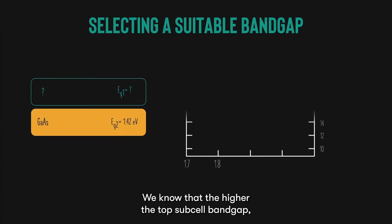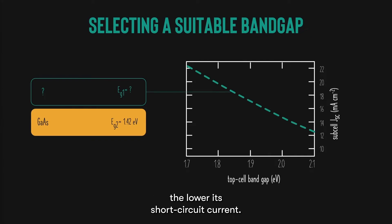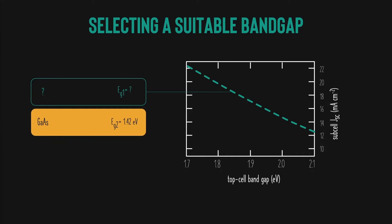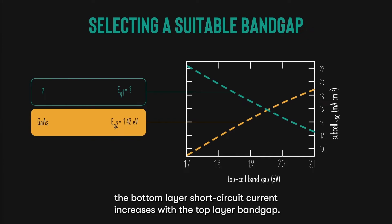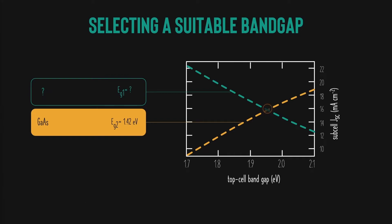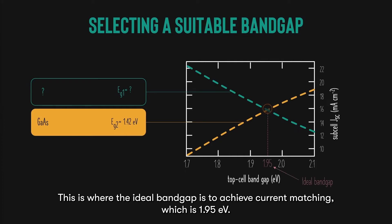We know that the higher the top sub-cell bandgap, the lower its short circuit current. But because the higher top sub-cell bandgap allows a greater range of light to pass through to the bottom layer, the bottom layer short circuit current increases with top layer bandgap. There is a point where both the short circuit currents of the top and bottom junctions equal each other. This is where the ideal bandgap is to achieve current matching, which is 1.95 electron volts.